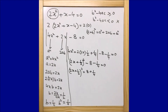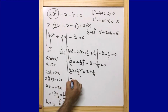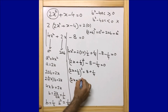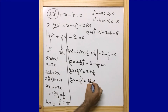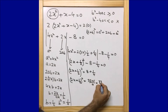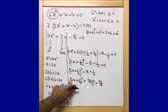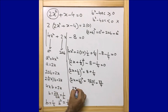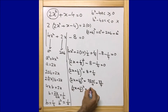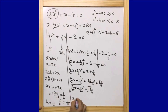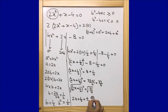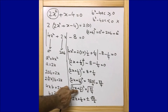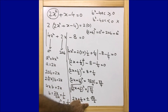Solving the right side: 8 = 32/4, so 32/4 + 1/4 = 33/4. Therefore (2x + 1/2)² = 33/4. Taking the square root of both sides: 2x + 1/2 = ±√(33)/2, since √4 = 2.